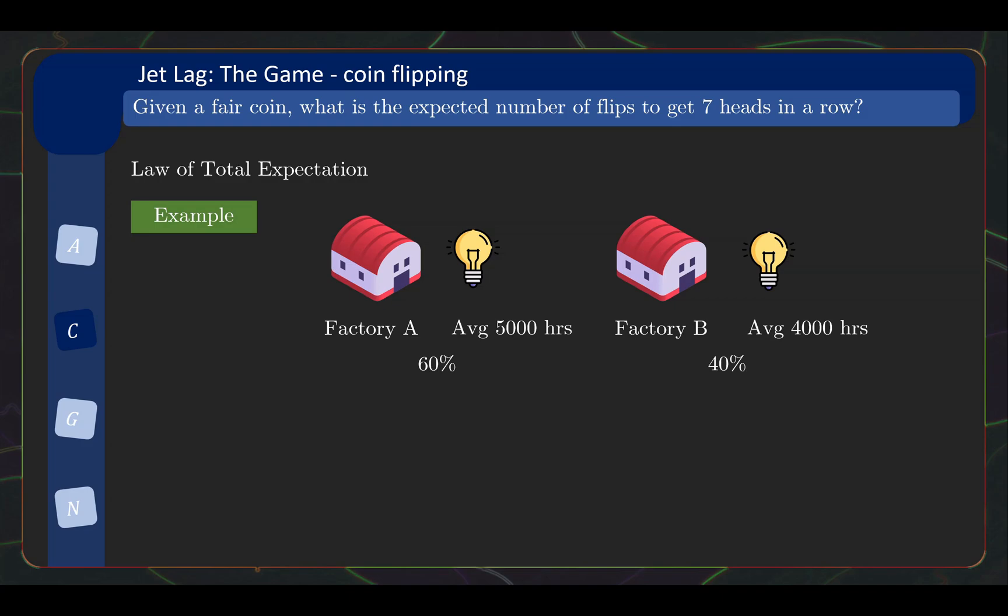Now, what is then if I randomly grab a light bulb in the market, what is then the expected number of hours that the light bulb will last? Well, it seems quite commonsensical that because factory A takes 60% of the market and the average 5000 hours, you have 5000 times 0.6 and then you plus 4000 times 0.4 and then this gives you 4600. Basically, it's sort of like a weighted average of the two averages.